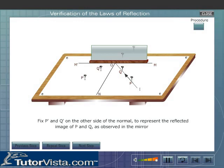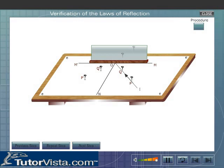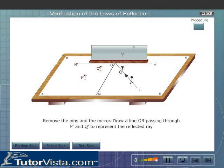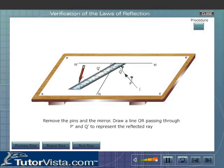Fix P' and Q' on the other side of the normal to represent the reflected image of P and Q as observed in the mirror. Remove the pins and draw a line OR passing through P' and Q' to represent the reflected ray.